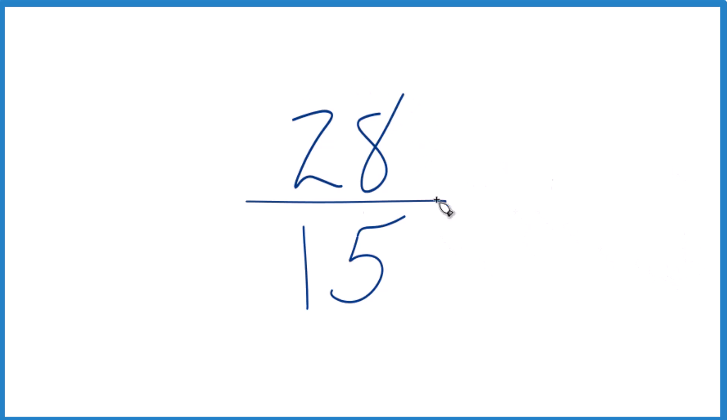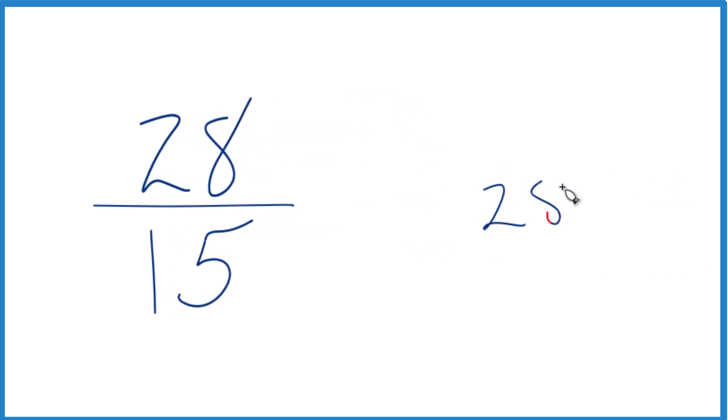So basically what we're asking is we're taking 28, and we want to see how many times 15 will go into 28. 28 divided by 15. So 1, 1 times 15, that's 15 with 13 left over.